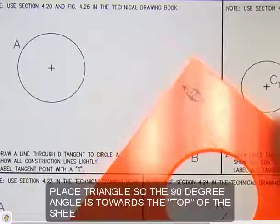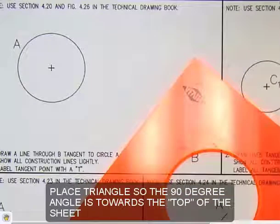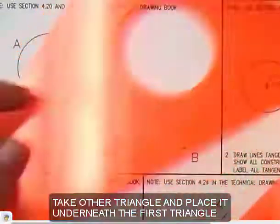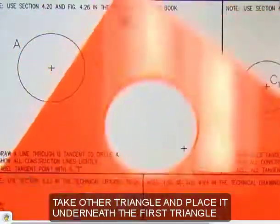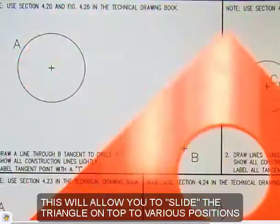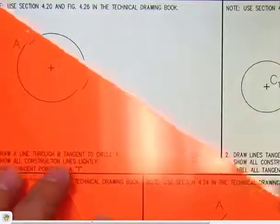Take one of your triangles and lay the 90 degree angle towards the top of the sheet. Take your other triangle and place it underneath the first triangle. This will allow you to slide the triangle on top to various positions.